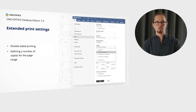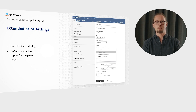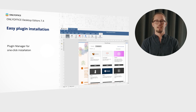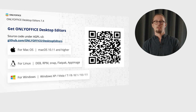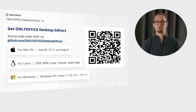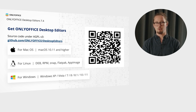The desktop app also comes with more print settings, including double-sided printing and the ability to define a number of copies for the page range. Besides, in the desktop app, you are now able to use the plugin manager for one-click installation, previously available only in the online version. If you want to try the updated desktop app yourself, you can download it from the official website — this QR code will lead you to the download page, where you can find a client for Windows, Linux and macOS. The source code of the app is also available on GitHub.